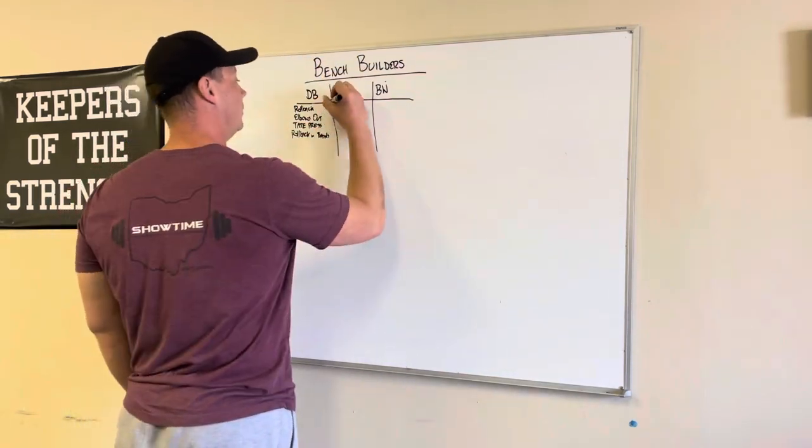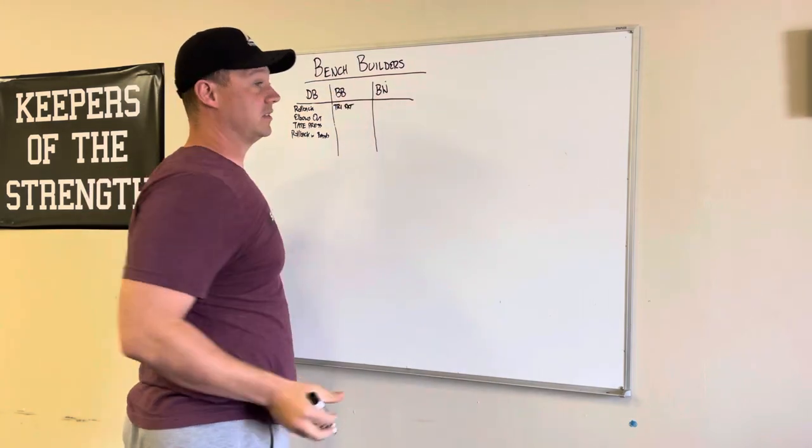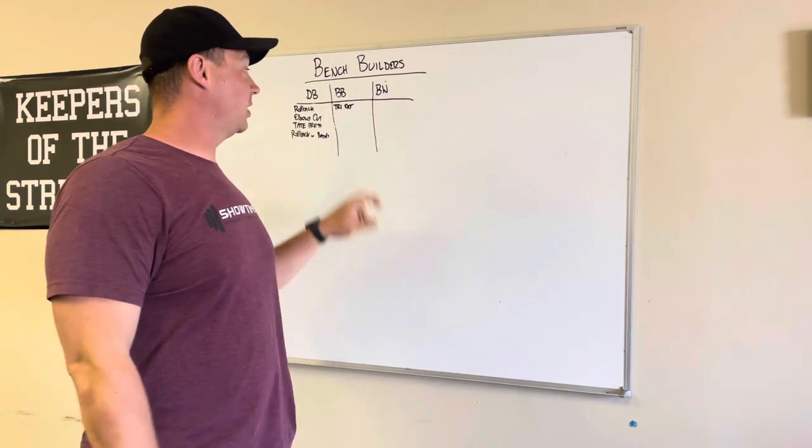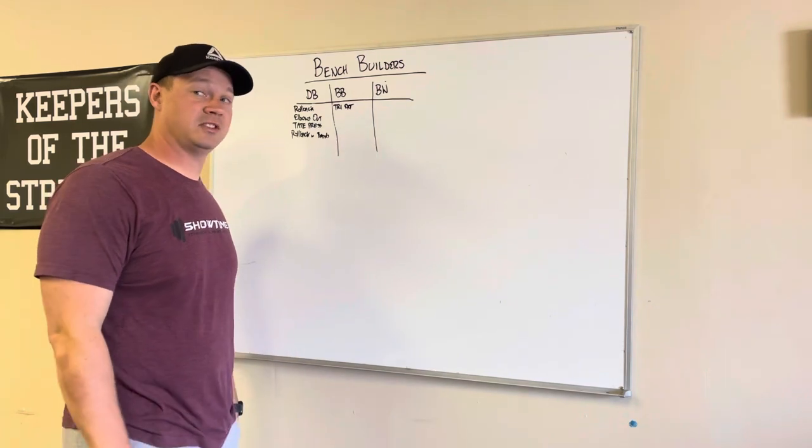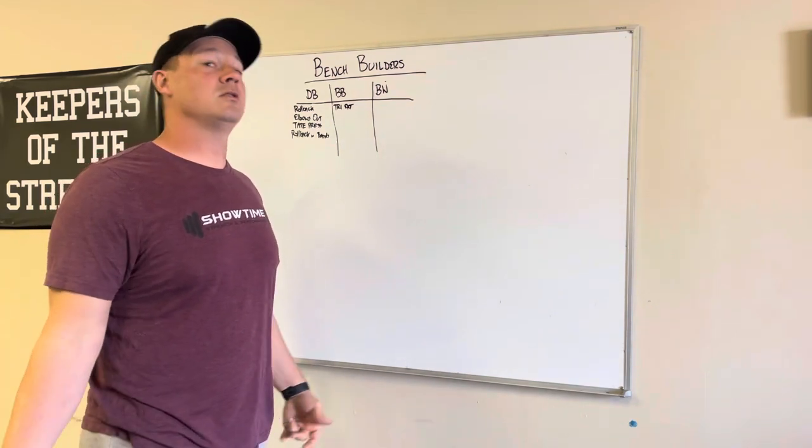All right, barbell tricep extensions, just basic old school tricep extensions, nothing. But the thing I see people not doing when they're doing barbell tricep extensions, it's like they put like 10 pounds on each side. Like, no, go heavy.